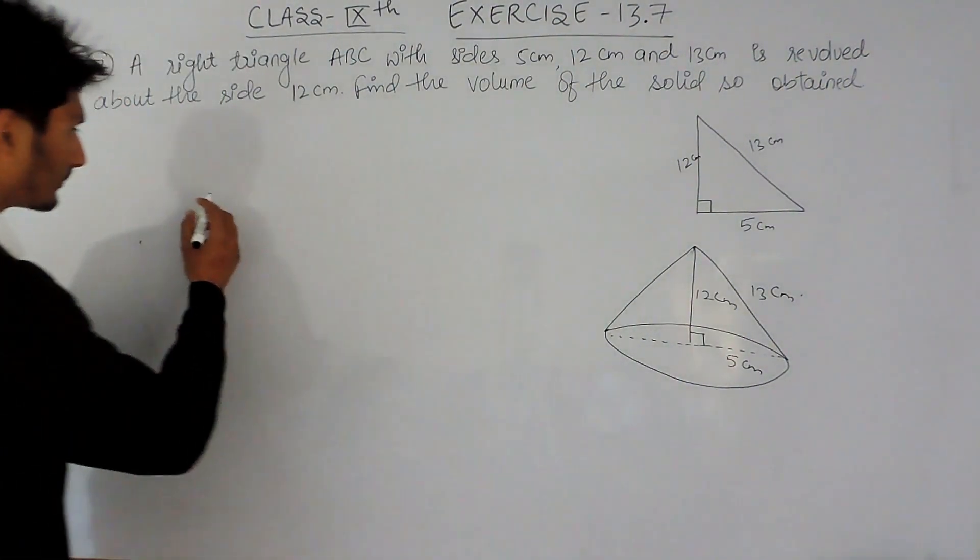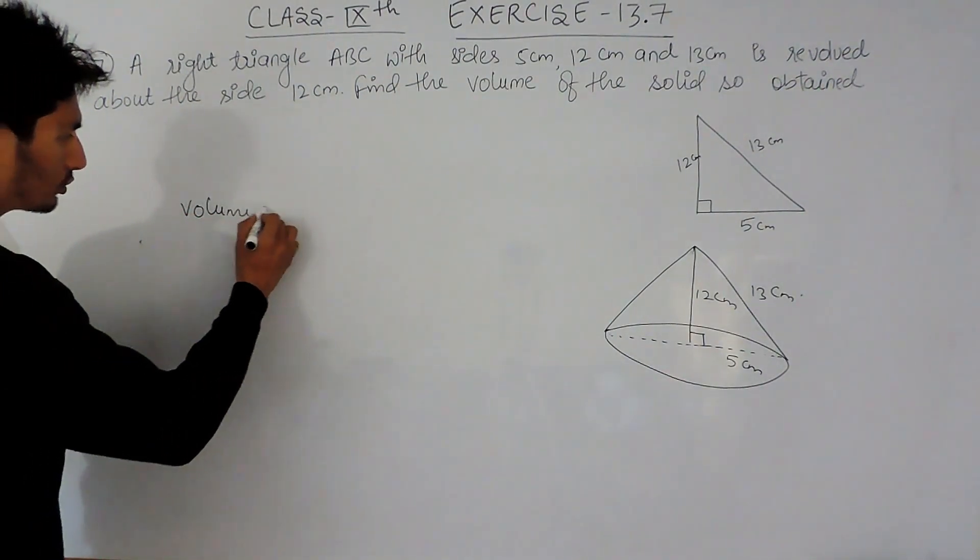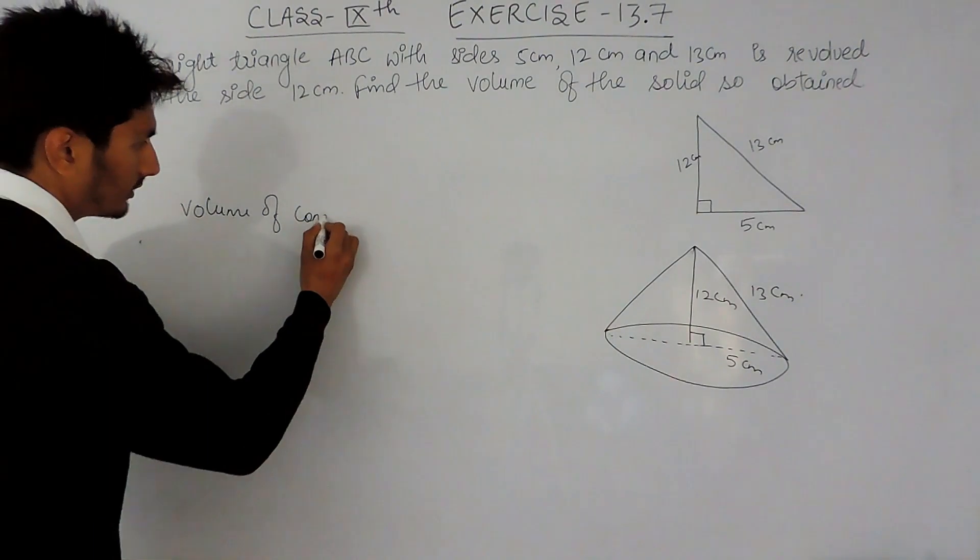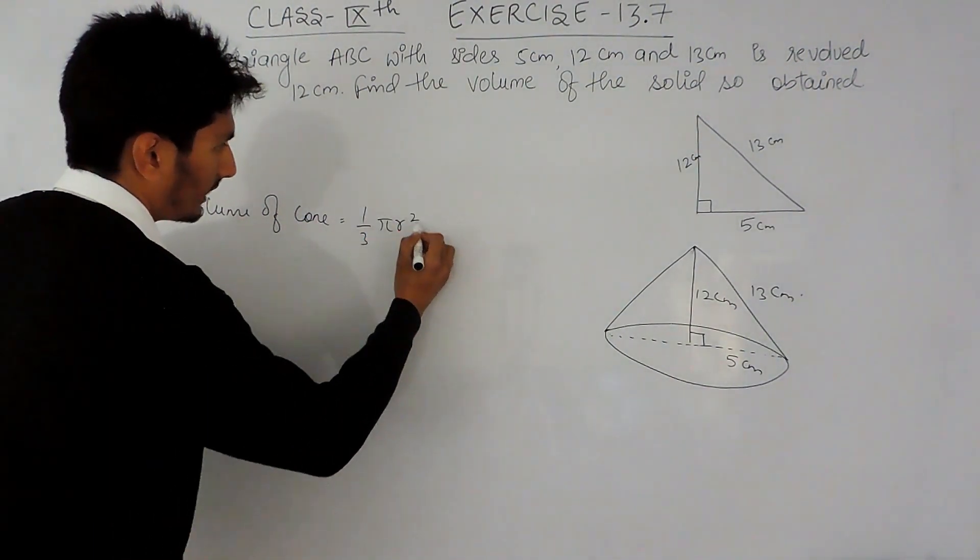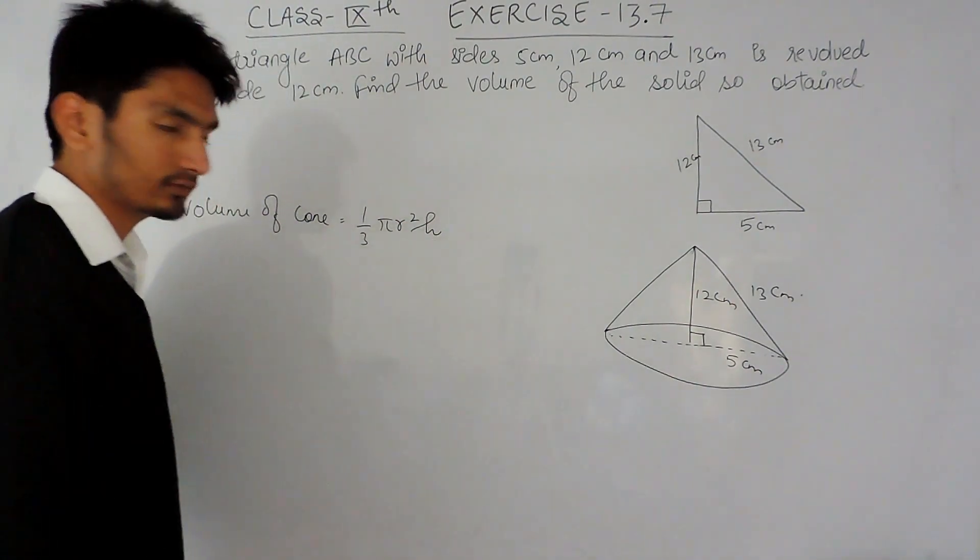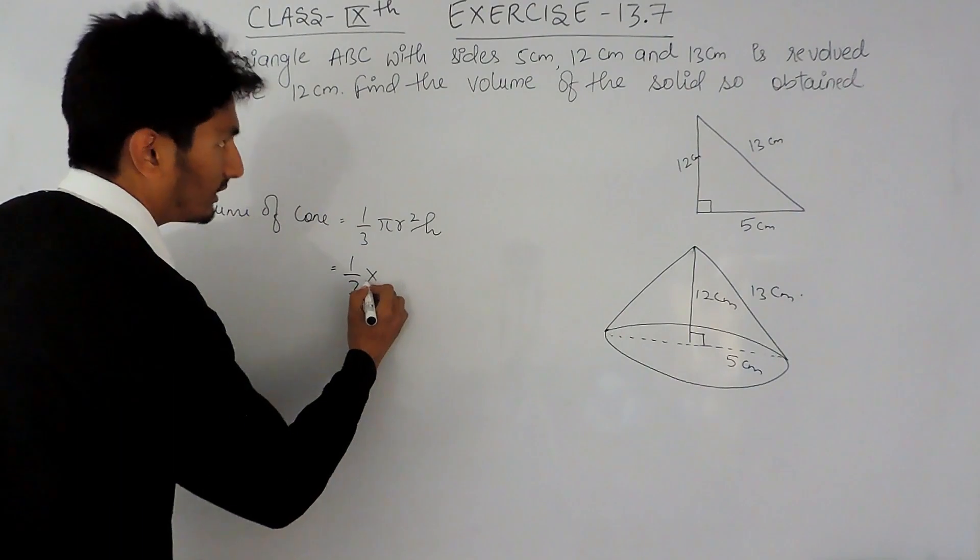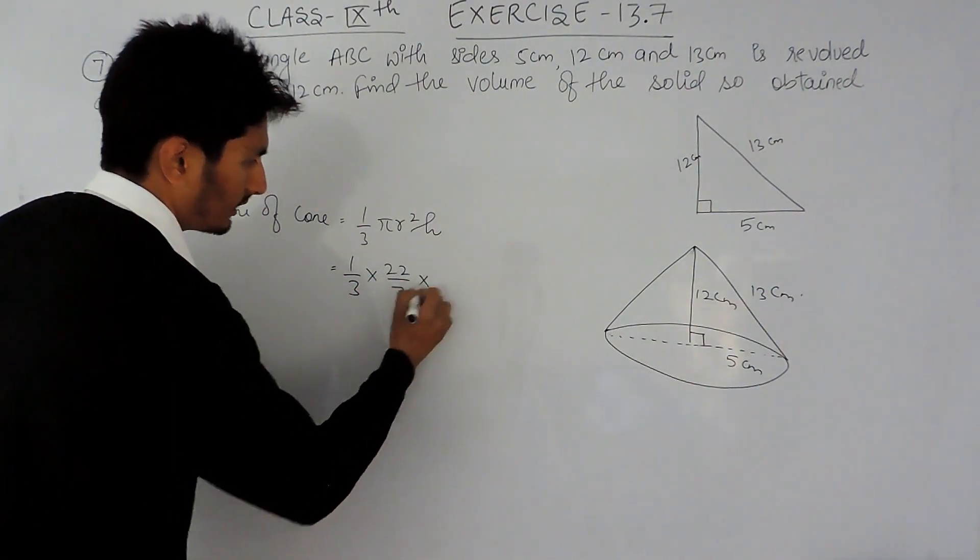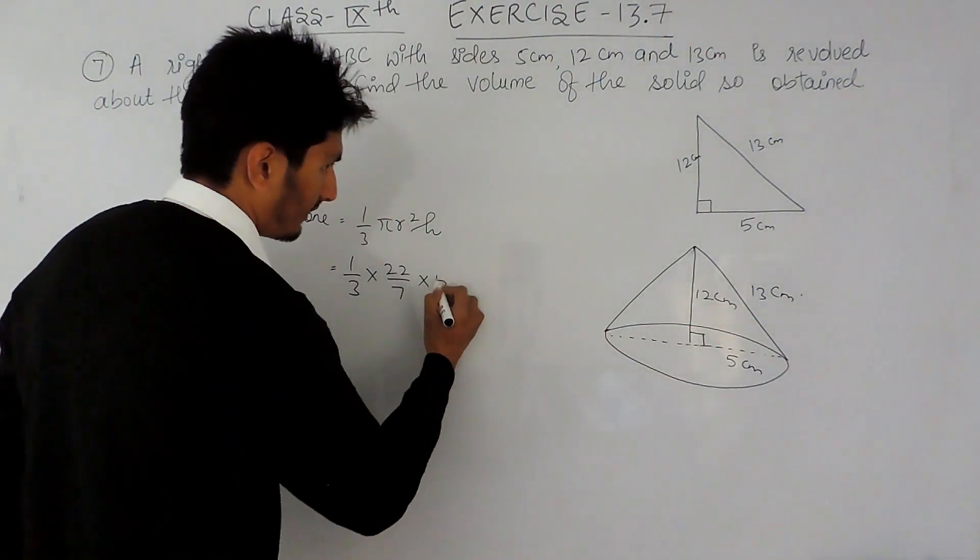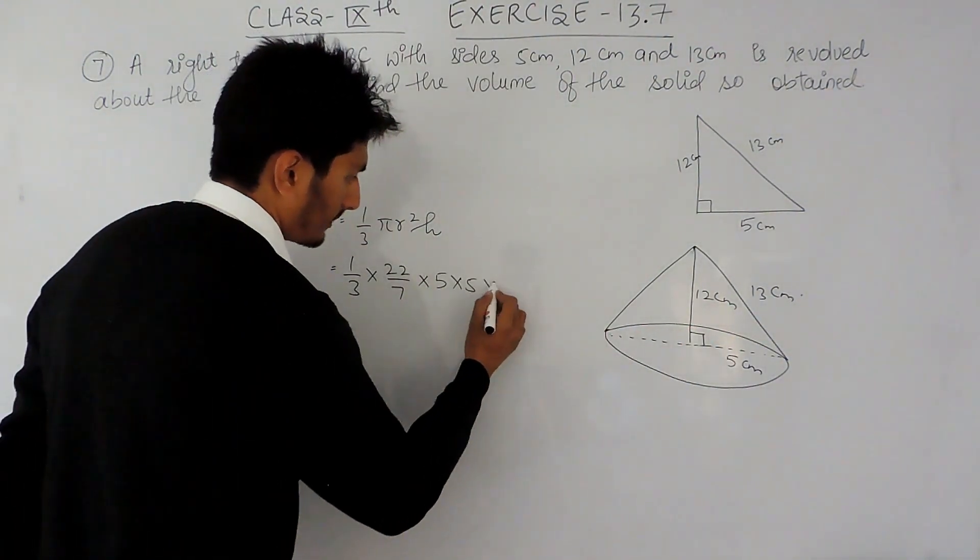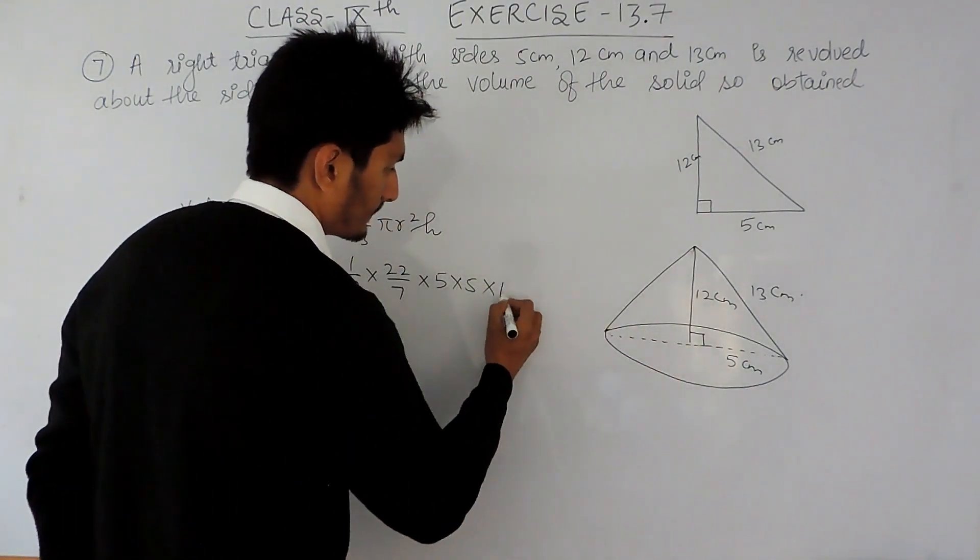I am finding the volume here. So the volume of the cone is 1 by 3 pi r squared h. Substituting the values: 1 upon 3, the value of pi is 22 upon 7, here our radius is 5 so it should be 5 into 5 multiplied by h.